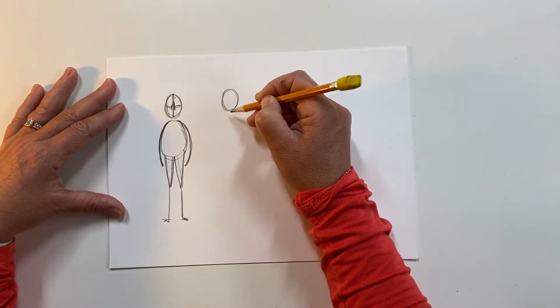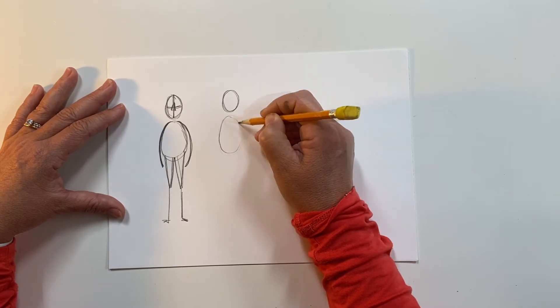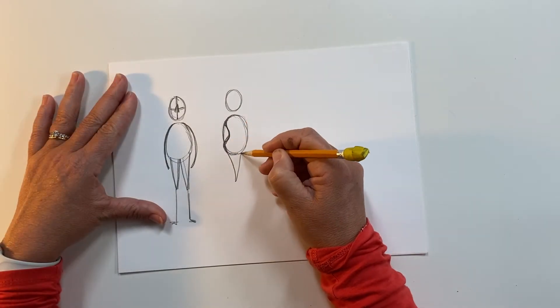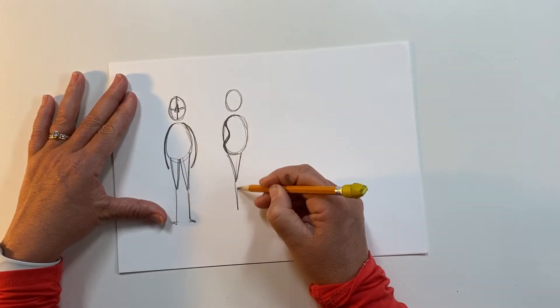As the side view, the oval head is the same and the oval body is the same except there's a curve in the oval of the back making a bean shape. The legs and the arms are the same from the side view as they are in the front view.